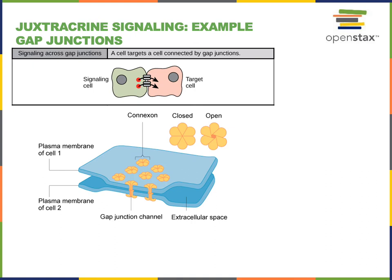Juxtacrine signaling is a type of intercellular signaling that requires direct contact between two signaling cells, so the two cells are directly adjacent. One form of juxtacrine signaling is gap junctions, which allow a chemical signal to travel from the cytosol of one signaling cell into the cytosol of the adjacent target cell.